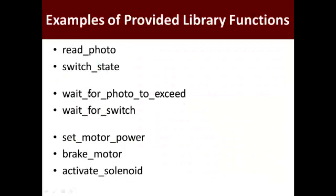If you've looked through the library we've provided, there's a bunch of documentation in an .mht file — open that up in something like Word to click through and read the different functions. I want to touch briefly on the ones you'll be using as you develop your code for the contest. The first two — 'read photo' and 'switch state' — let you see what your photo transistors and switches are doing so you can debug your components, confirm your photo transistor is working, and understand what closed and open means for your switch.